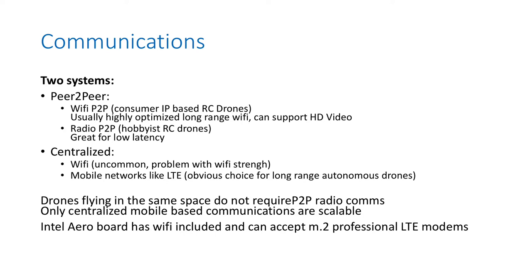In terms of communication, there are two typical topologies. The first is peer-to-peer — it can be Wi-Fi based, for example, where consumer IP-based remote-controlled drones act as a hotspot and you connect your mobile device to the drone on a local network. This is usually good for consumer drones, and it can even be optimized with long-range Wi-Fi to stream HD video. The second very typical topology is a simple radio peer-to-peer: a radio receiver on the drone and a remote control with you. It's great for low latency, but it is not IP-based.